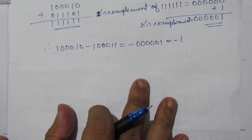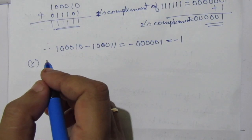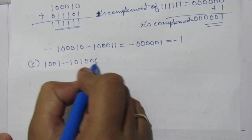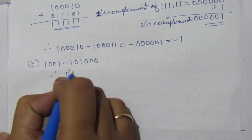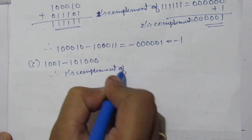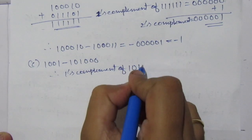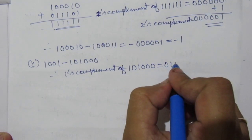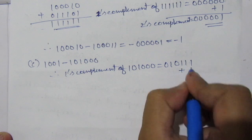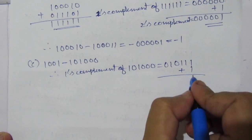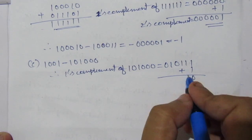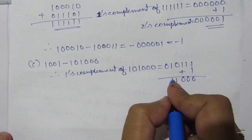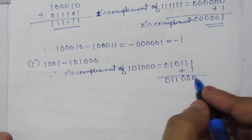Now let us go to part C. In C, we have 1001 minus 1010000. The 1's complement of 1010000 equals 0101111. Add 1: 1 plus 1 is 0, carry 1; 1 plus 1 is 0; then we have 1, and 1, 0. So the 2's complement equals 0101110. This is the 2's complement.